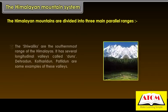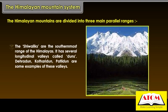The Shivaliks are the southernmost range of the Himalayas. They have several longitudinal valleys called dhuns. Dehradun, Kothari dhun and Patli dhun are some examples of these valleys.